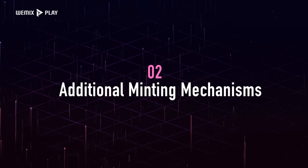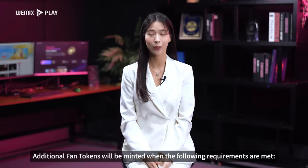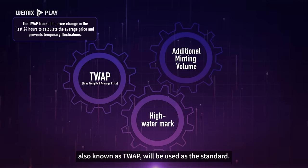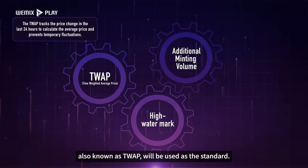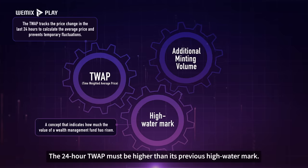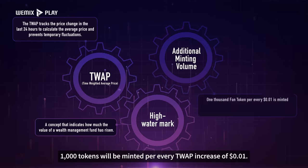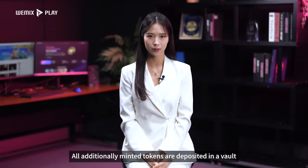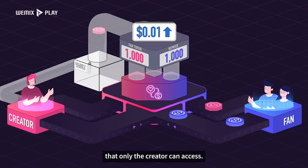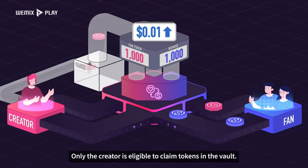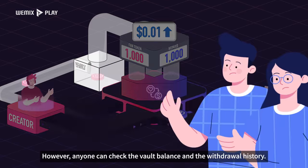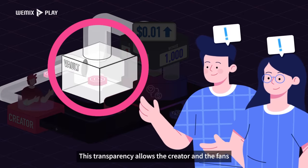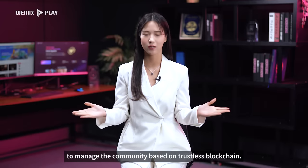Additional Minting Mechanisms: Additional Fan Tokens will be minted when the following requirements are met. First, the 24-hour time-weighted average price, also known as TWAP, will be used as the standard. The 24-hour TWAP must be higher than its previous high-water mark. 1000 tokens will be minted per every TWAP increase of 1 cent. All additionally minted tokens are deposited in a vault that only the creator can access. Only the creator is eligible to claim tokens in the vault. However, anyone can check the vault balance and the withdrawal history. This transparency allows the creator and the fans to manage the community based on the trustless blockchain.